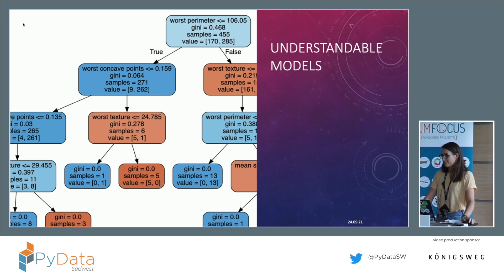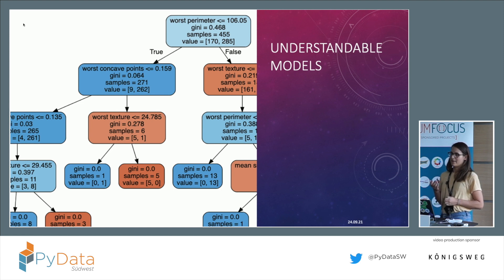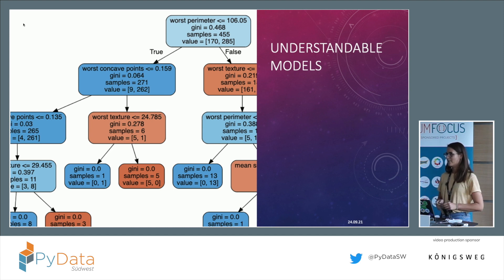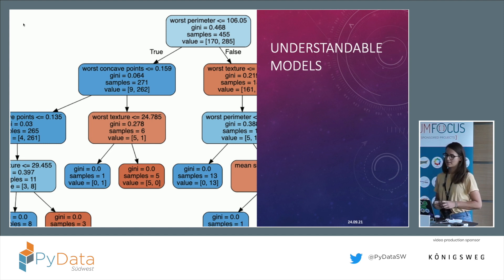Another possibility is simply using understandable models. The most straightforward approach is to use models like decision trees or regressions. But if you've ever worked with NLP data, it's not that easy — you have high dimensionality and a lot of features, making it very difficult to display them in a decision tree. So it really depends on your data. When you can transform it to fit such models, it's really great to use them.